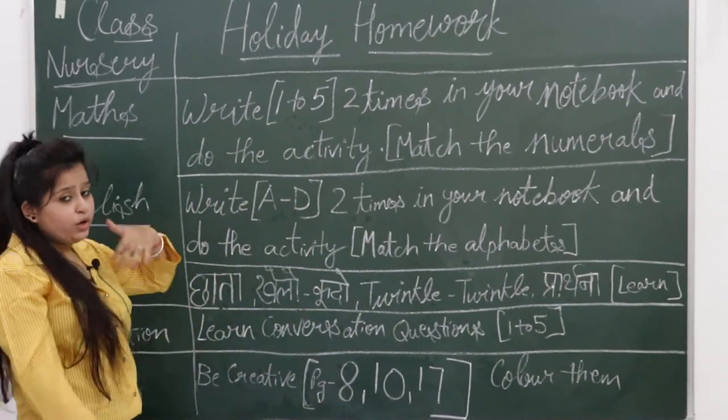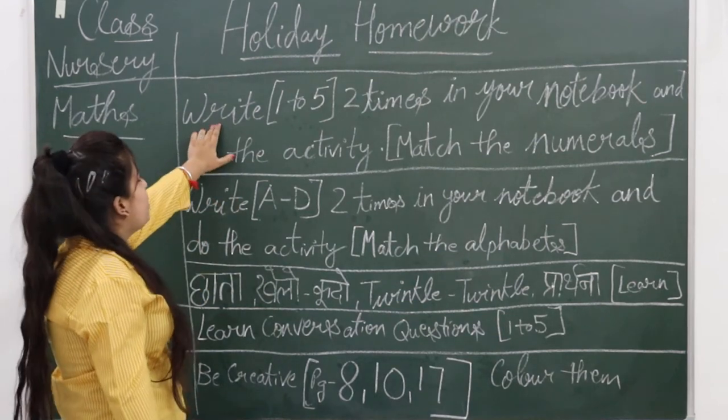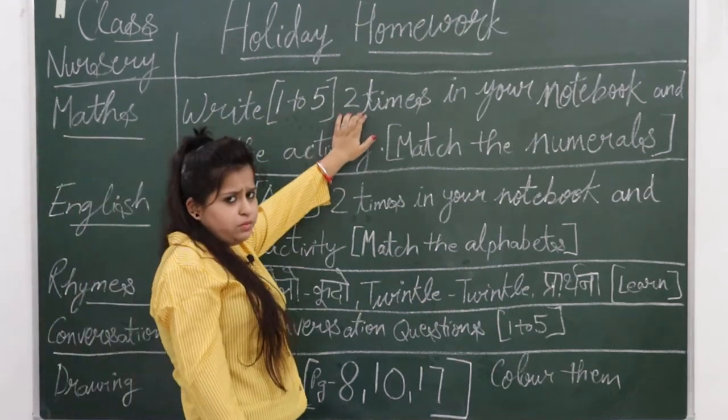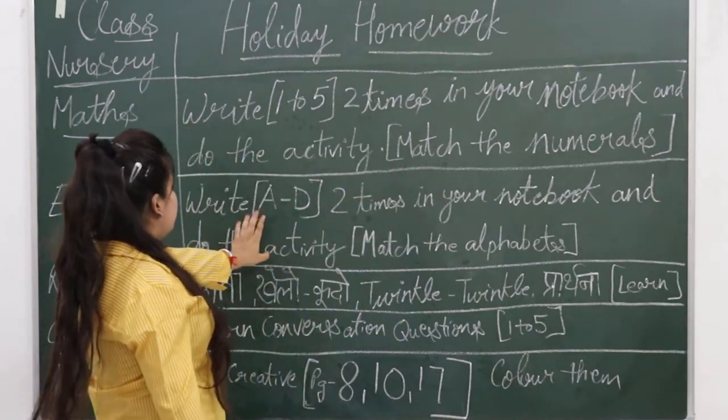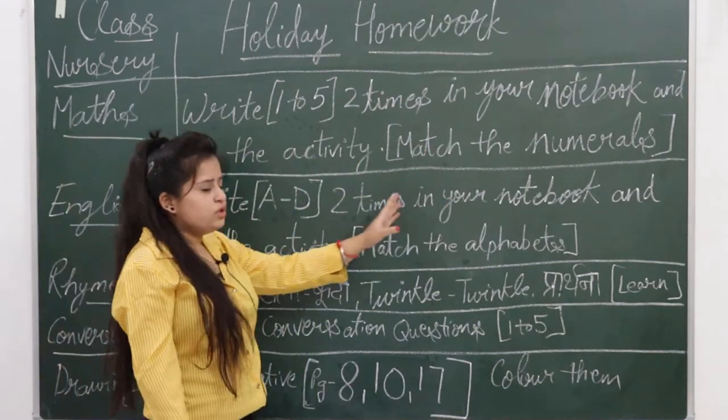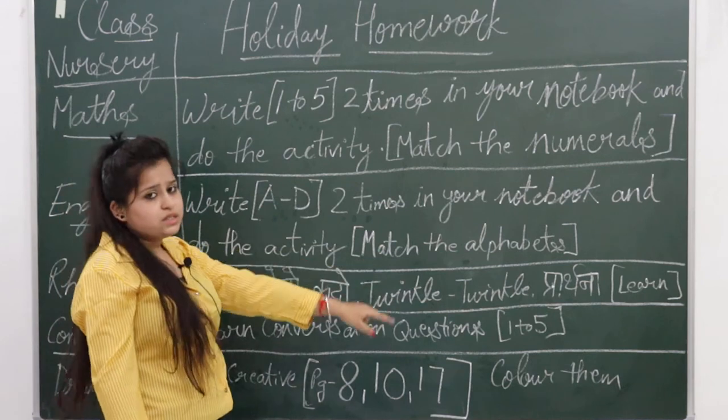So kids, this is all your homework. Let me show you one more time. What do you have to do in math? 1 to 5, two times, and the activity match the numerals. Next, write A to D two times in your notebook and match the alphabet.